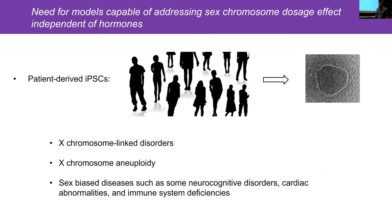In humans, it's difficult to investigate the role of sex chromosomes independent of hormones, so there is a need for models. In our lab, we used patient-derived induced pluripotent stem cells from people with different numbers of sex chromosomes. This helps address the contribution of sex chromosomes to X-linked disorders, sex chromosome aneuploidies, and sex-biased diseases such as neurocognitive disorders, immune system defects, and heart abnormalities.